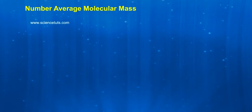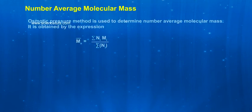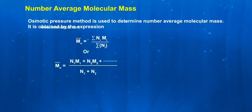Number average molecular mass. Osmotic pressure method is used to determine number average molecular mass. It is obtained by the expression M̄n equals sigma ni mi by sigma ni, or M̄n equals